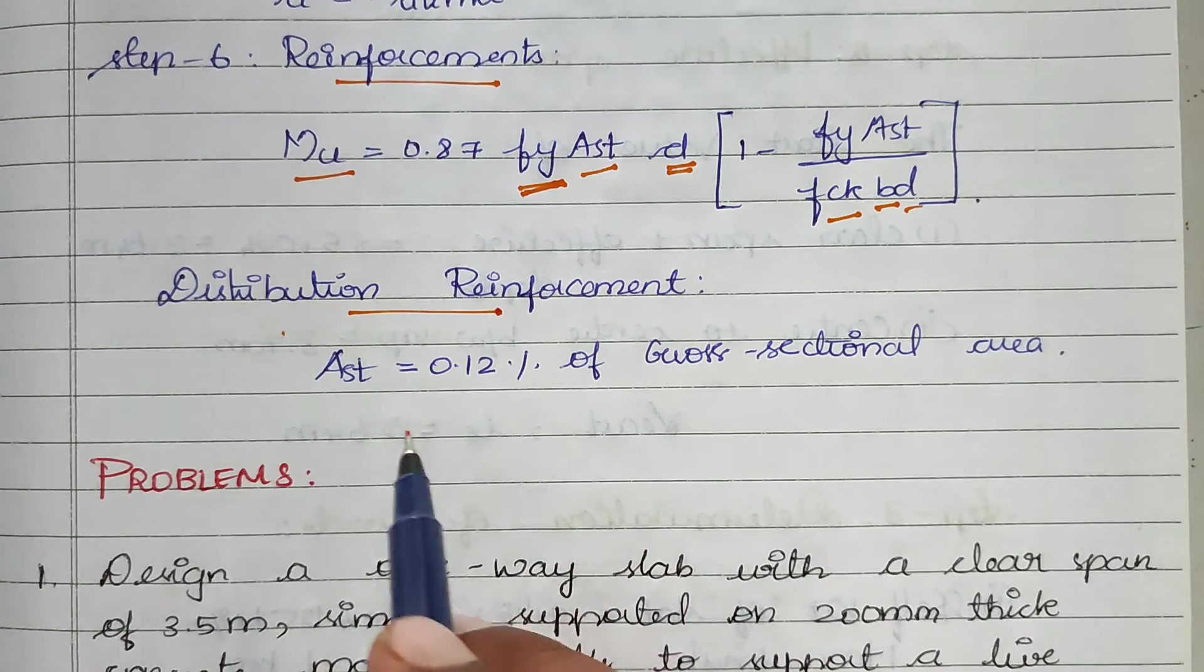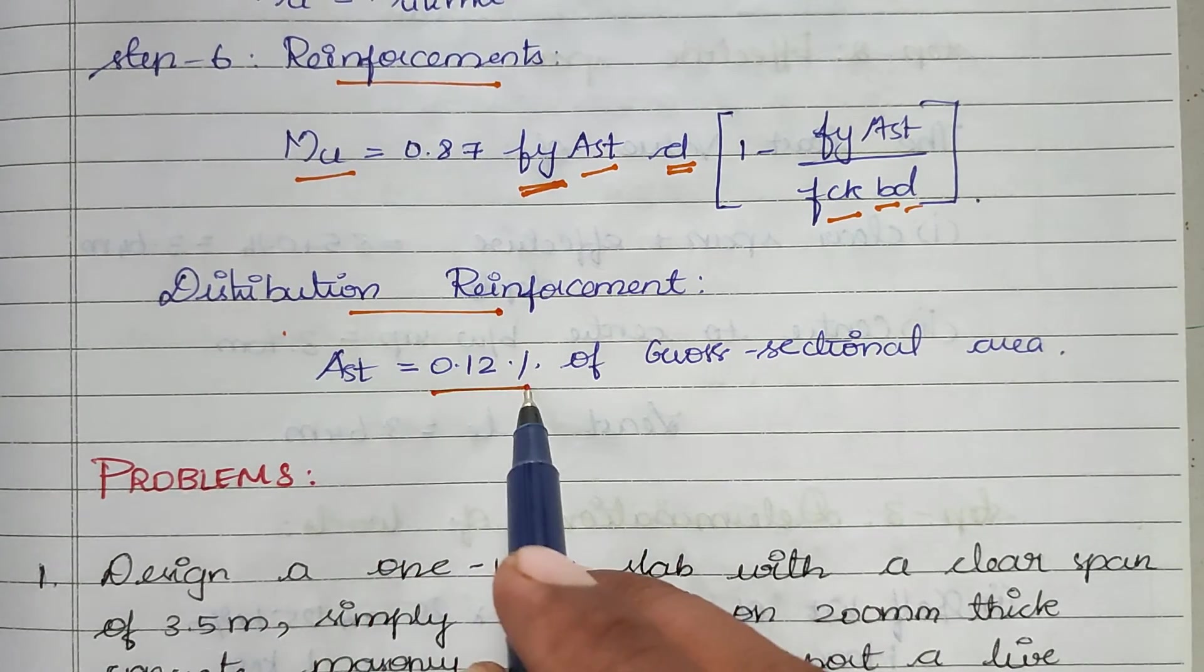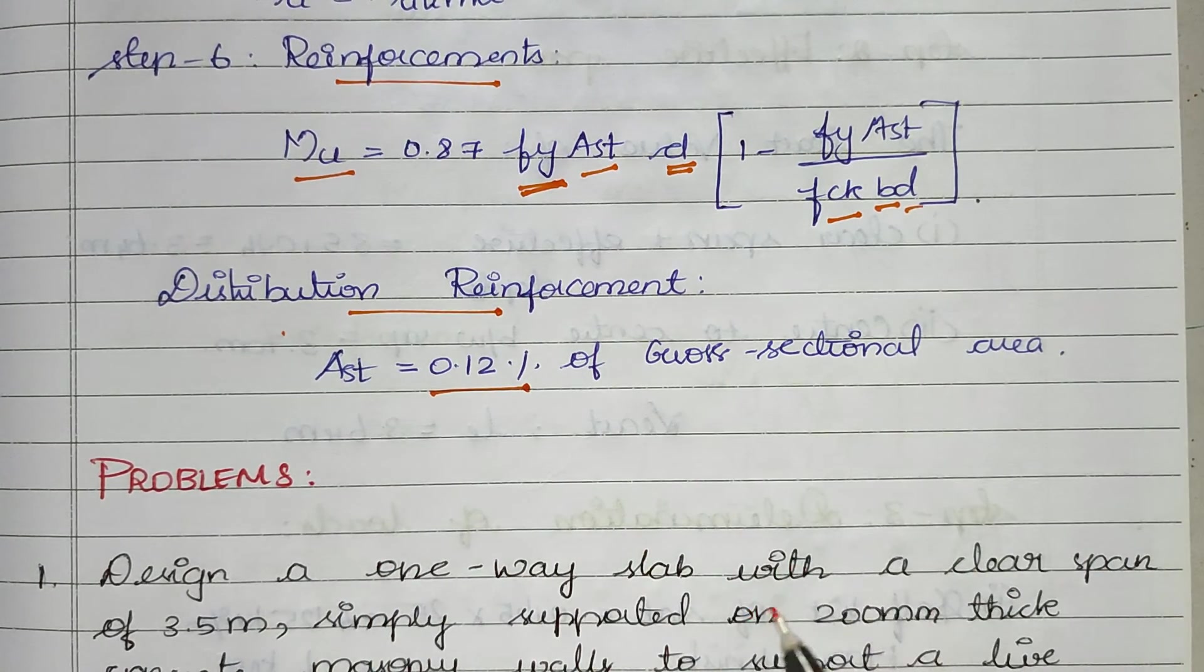We provide distribution reinforcement: Ast = 0.12 percent of cross-sectional area. Substitute all values and we get the design. This is the design procedure for one-way slab. We will see more in the next video. Thank you.